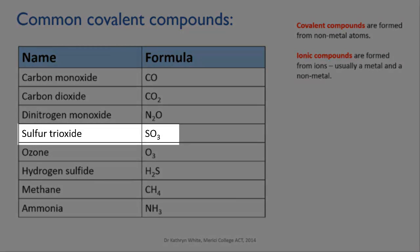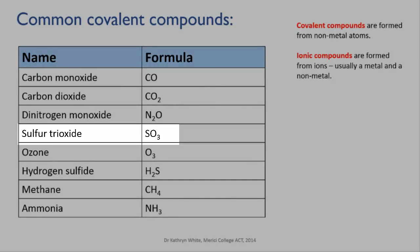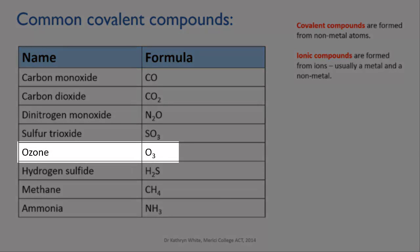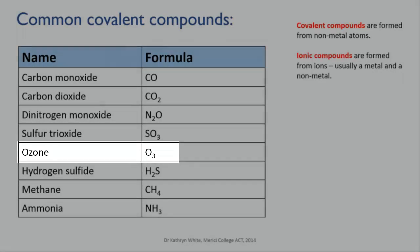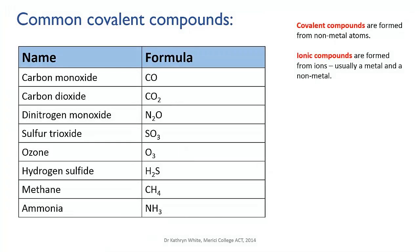Sulfur trioxide is a gas pollutant and one of the compounds that produces acid rain when it combines with rainwater. Ozone is another toxic gas, but the layer of it that exists high in the atmosphere fulfills a vital role — it absorbs UV radiation from the sun before it gets down to us on the surface.